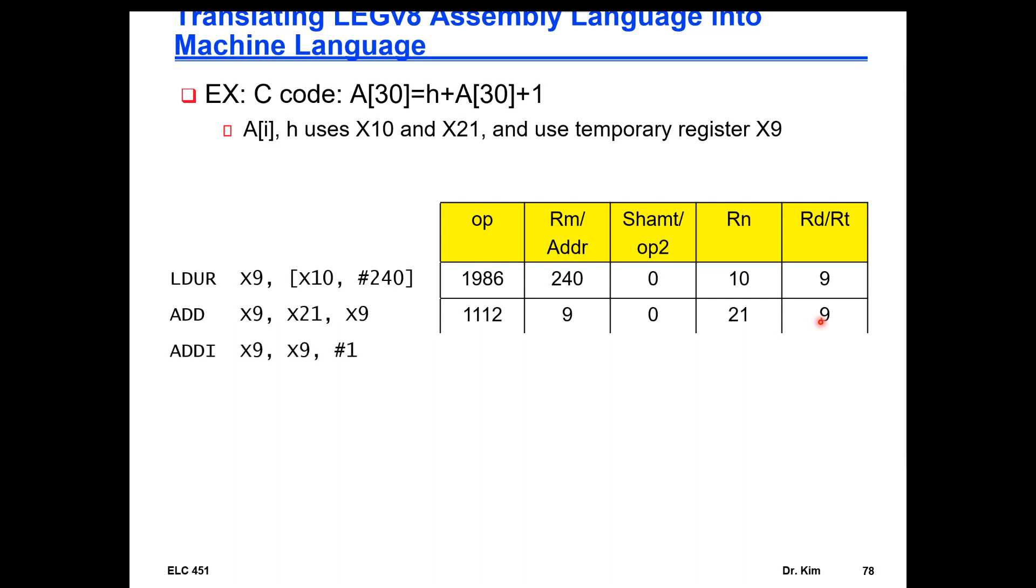Then we could do an add immediate to add the one. So here we have the opcode, the immediate field, which expands these two columns, and the register source, which is the same as the registered destination.